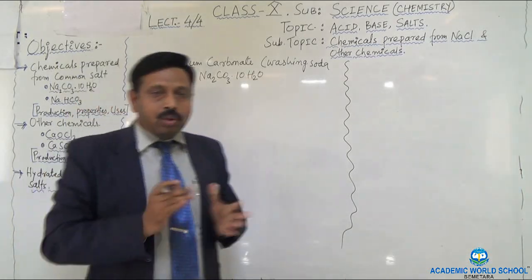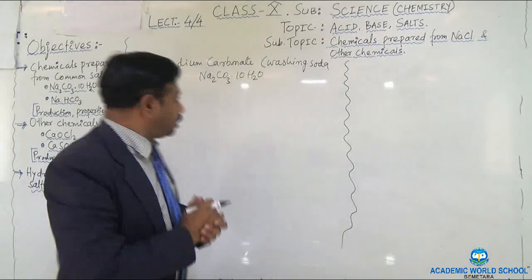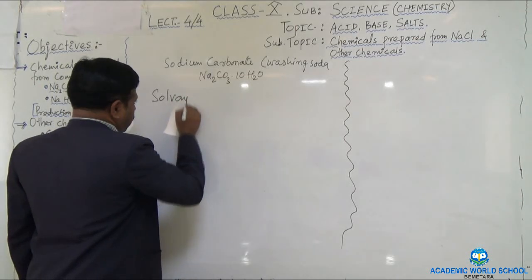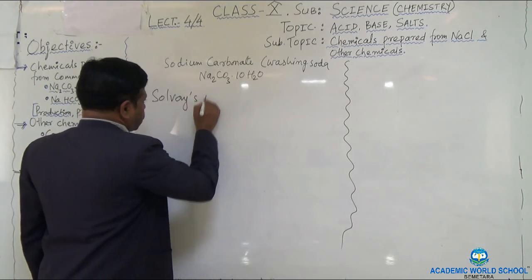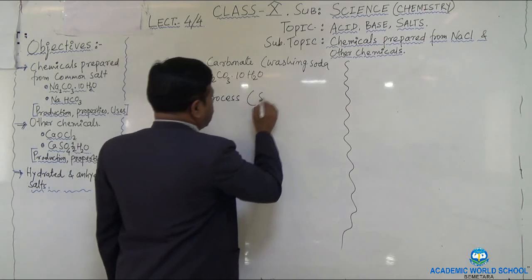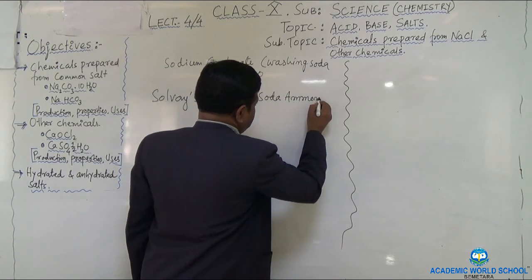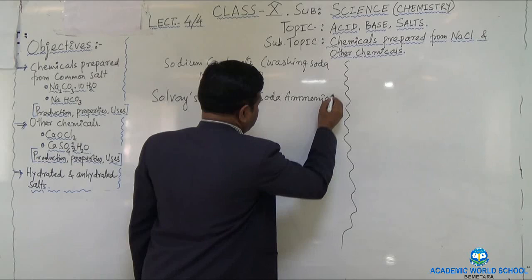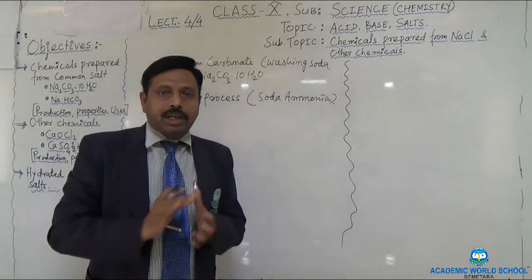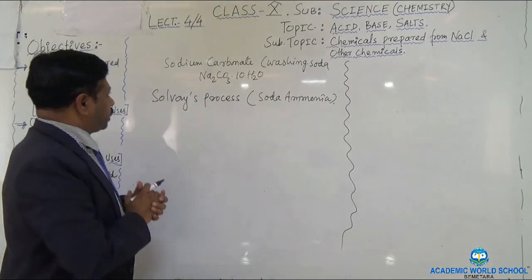First of all, we will learn how to prepare sodium carbonate. The method is known as the Solvay process, also known as the soda ammonia process. This process consists of three steps to prepare washing soda or sodium carbonate.